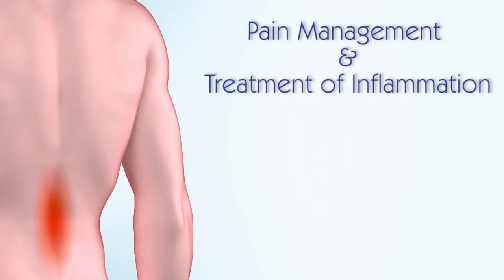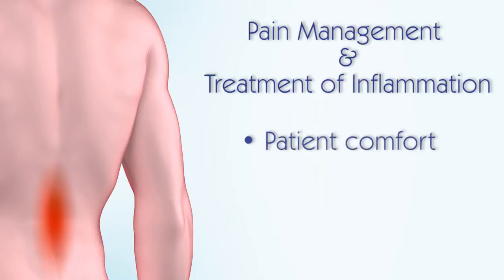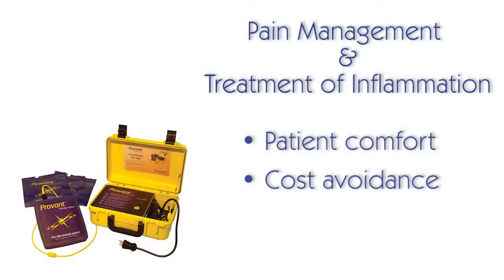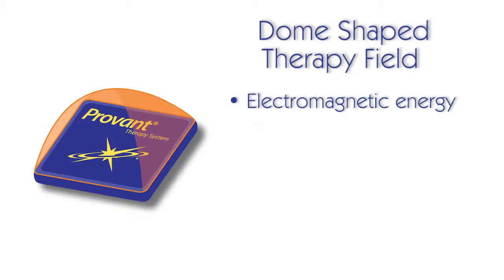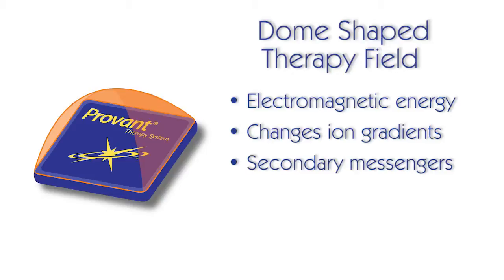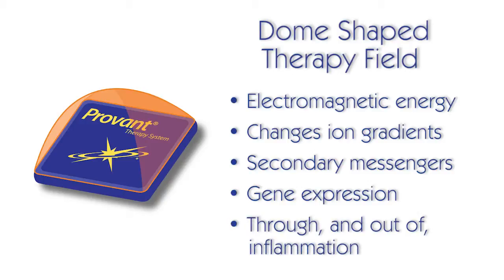Pain management and the treatment of inflammation are important considerations following operative procedures. Appropriately managed pain allows for patient comfort and avoidance of increased costs associated with undermanaged and persistent pain. The Regenesis Provant therapy system is a non-narcotic option where patients can self-treat at home with simple, twice-daily treatments. Provant works by delivering a field of electromagnetic energy that changes ion gradients across the cell membrane, leading to the activation of secondary messengers, resulting in a cascade of gene expression and protein activity that brings inflamed tissue through and out of inflammation more rapidly.